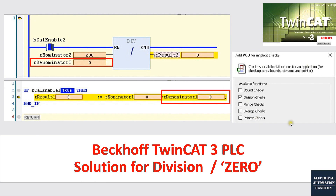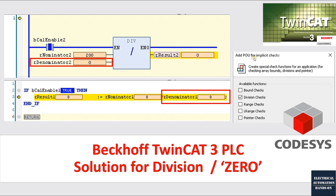To prevent this, I will introduce the POU for implicit checks feature, where you enable the division check. I'll use TwinCat 3 to demonstrate. If you are using any other programming platform with a CODESYS system, it also has this feature — go to POU for implicit checks and enable it to solve the divide-by-zero issue.